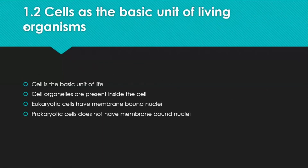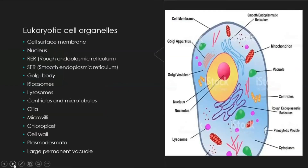Moving to the second section: cells as the basic unit of living organisms. Cells are the basic unit of life, and metabolic reactions like respiration take place in the cell. Just as we have organs like the brain and lungs, cells have organelles floating in the cytoplasm. Cells are classified into two types: eukaryotic and prokaryotic. Eukaryotic cells have fully developed nuclei, while prokaryotic cells have undeveloped nuclei. Observe the image showing the organelles found in a typical eukaryotic cell.